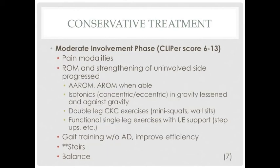Patients in the moderate involvement phase can benefit from progressing range of motion and strengthening exercises to active range of motion as tolerated, concentric and eccentric contractions in gravity-lessened and against-gravity positions, double-limbed closed kinetic chain exercises like mini squats or wall sits, single-leg upper extremity support exercises, gait training without an assistive device, and stair introduction.